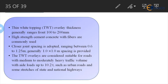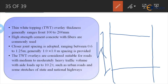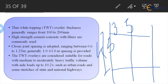In traditional rigid pavement, joints are spaced at 4.5 meters with a lane width of 3.5 meters — giving a slab dimension of 3.5 by 4.5 meters. But in thin white topping this is not the case. The contraction joint spacing is much reduced compared to traditional rigid pavement.